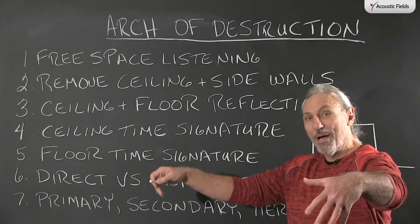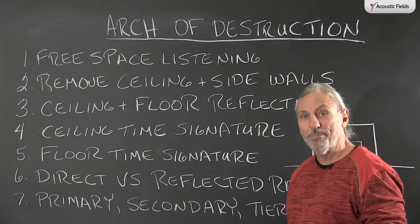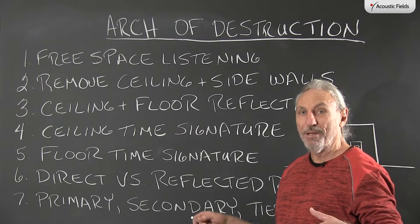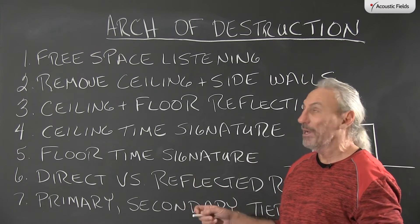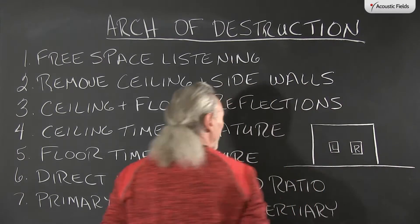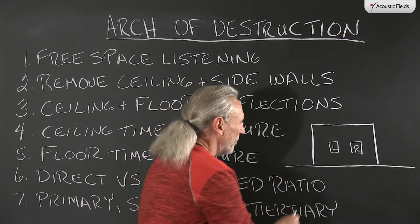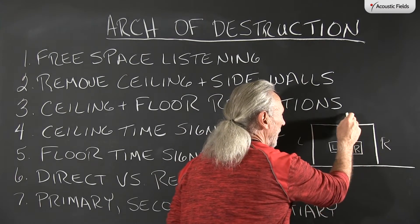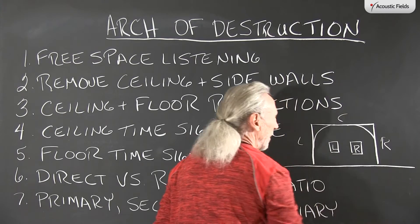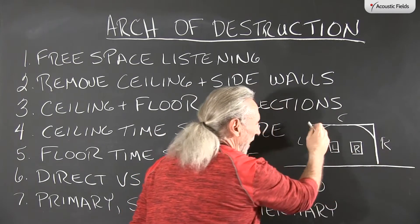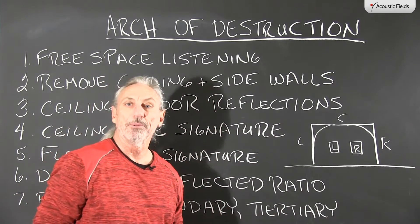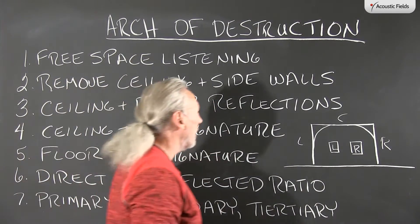If we take our system outside and listen to it without boundaries, we get a certain sound quality. If we listen inside with room boundaries, we have all kinds of issues — thus the name Arch of Destruction — which refers to our left side wall, our right side wall, and our ceiling, forming an arch. A lot of people don't really understand this, so we are going to walk through some examples.